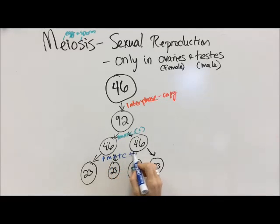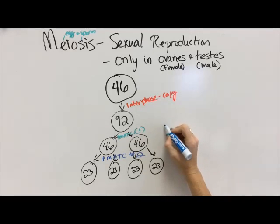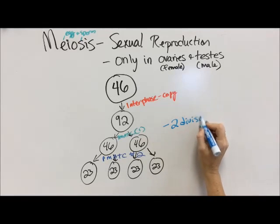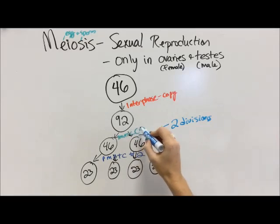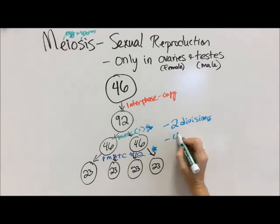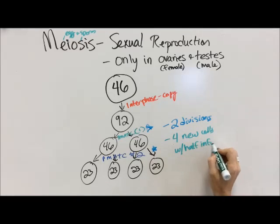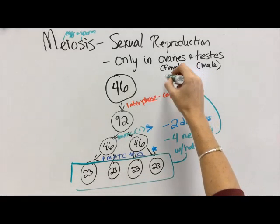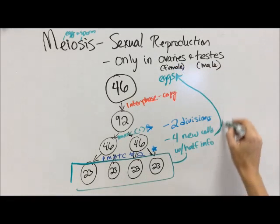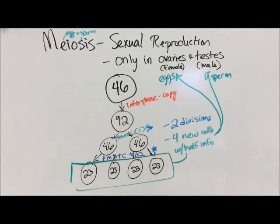So we wind up with one interphase and two rounds of PMAT-C. This gives us two divisions, and it also gives us four new cells. But importantly, those four new cells have half the amount of genetic information, because they have to combine together in order to give us a human. So in females this is eggs, and in males this is sperm.